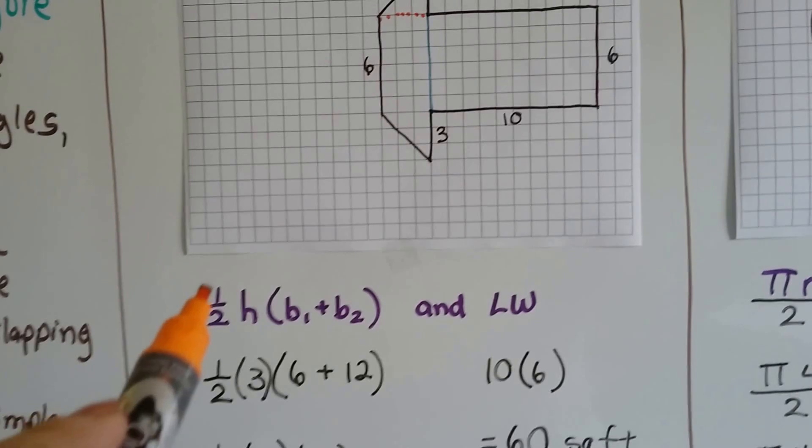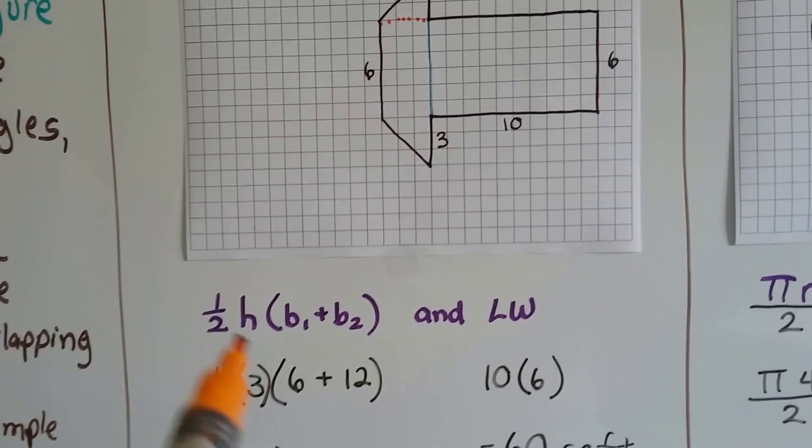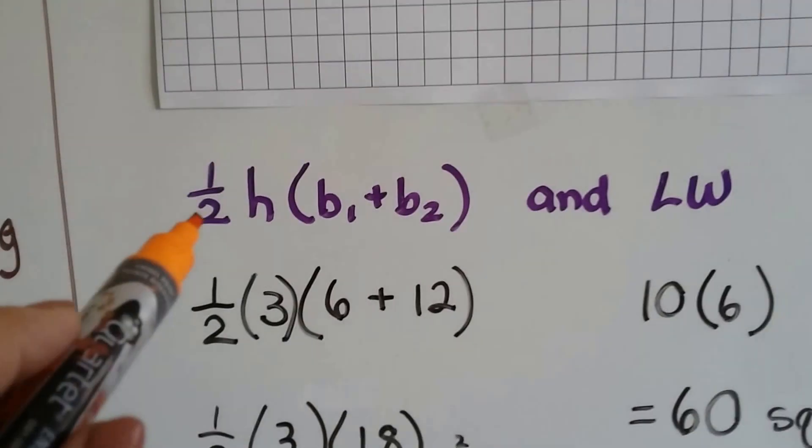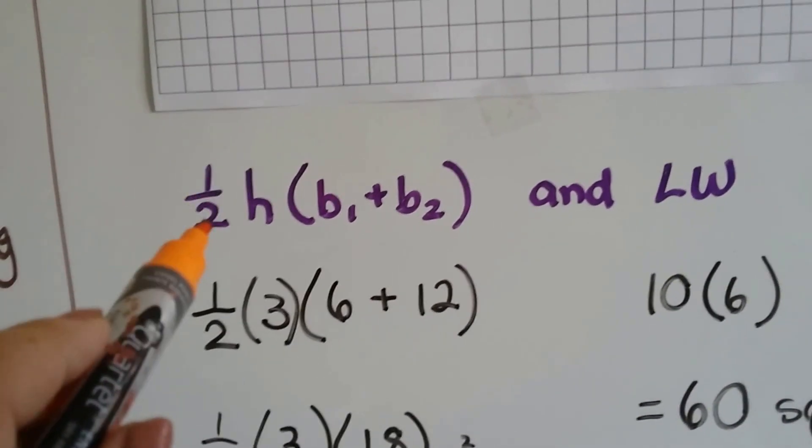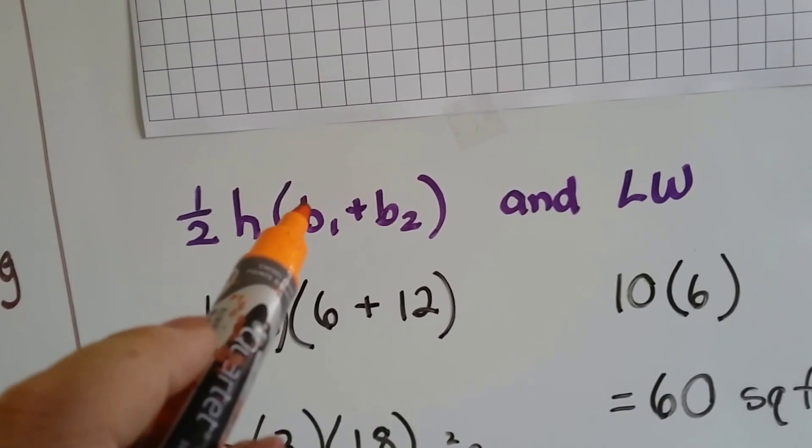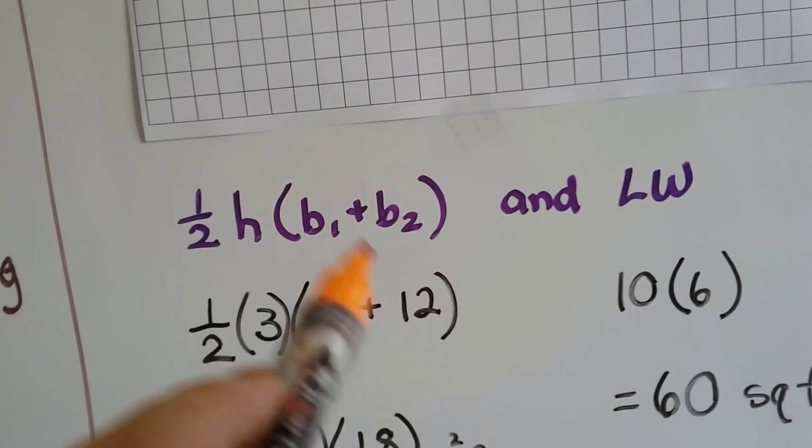So, I need the formula for the area of a trapezoid, and I need the formula for the area of a rectangle. Now, what this means is half of the height needs to be multiplied to base 1 plus base 2. That's what b1 and b2 mean.